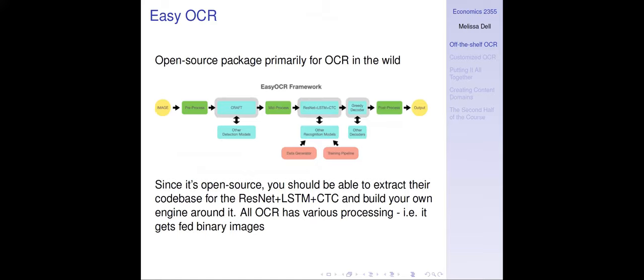I wanted to say a word about EasyOCR. This package was just released in 2020, it's open source, and it's designed to do OCR on natural images. You can use it on a document, but it's slower and not as accurate as Tesseract for that use case. You can see in the architecture there's a ResNet plus LSTM plus CTC component. Because it's open source, even if you don't want to OCR natural images, you could take that code and build your own engine on it. I think this OCR engine works pretty well and could be a good starting point.